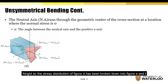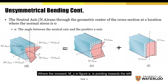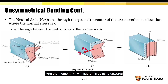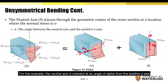So the stress distribution of figure D has been broken down into figure E and F, where the moment Mz in figure E is pointing towards the left, and the moment My in figure F is pointing upwards. For this example, the neutral axis is oriented at an angle of alpha from the positive z axis. On the following slide, we'll be using this example to determine the equation for alpha.